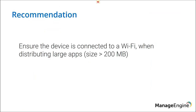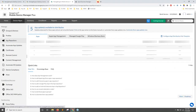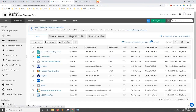As a recommendation, ensure devices are connected to Wi-Fi, particularly if the app size exceeds 200 MB, because Apple doesn't allow downloading an application from the App Store using mobile data if the size exceeds 200 MB. That covers Apple app management — integrating with ABM and syncing to silently install apps.